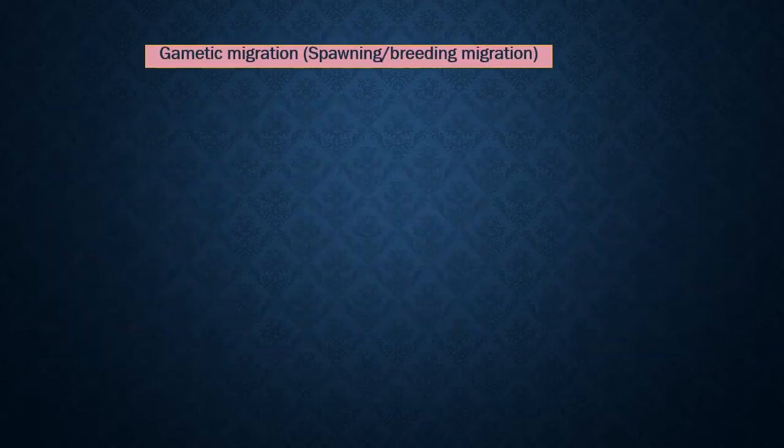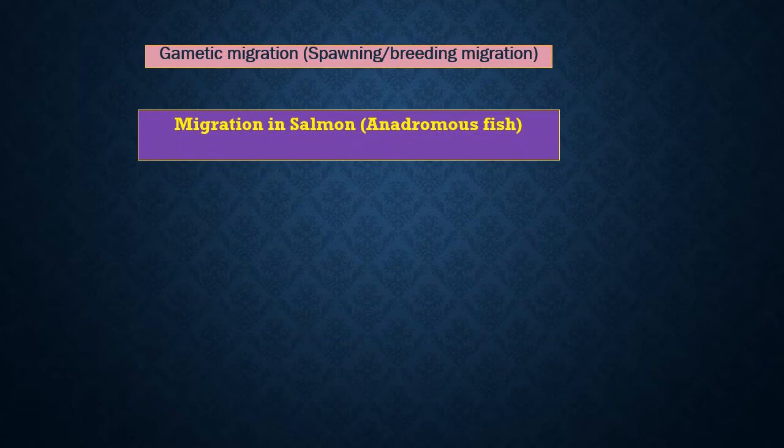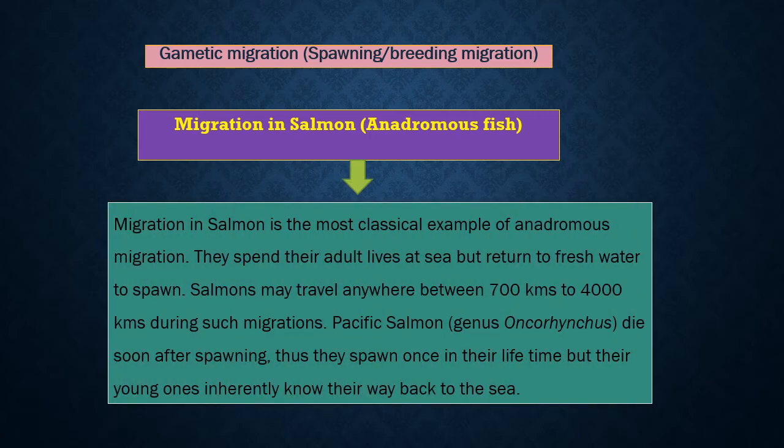Gametic migration, also called breeding migration, is undertaken by a fish to ensure better survival and proper development of their eggs and larvae. Anadromous migration is more commonly noted in fish, while catadromous migration is relatively uncommon, as seen in eels. Migration in salmon is the most classical example of anadromous migration.